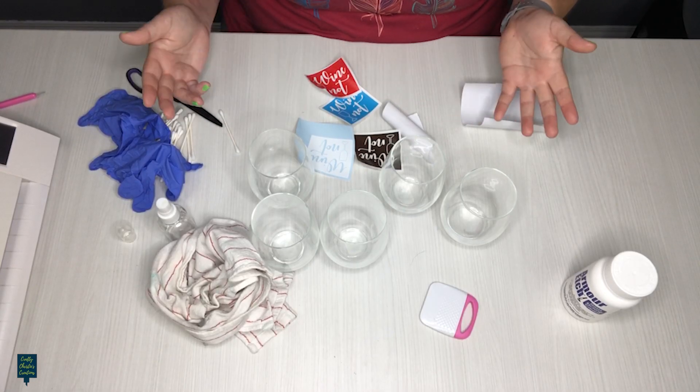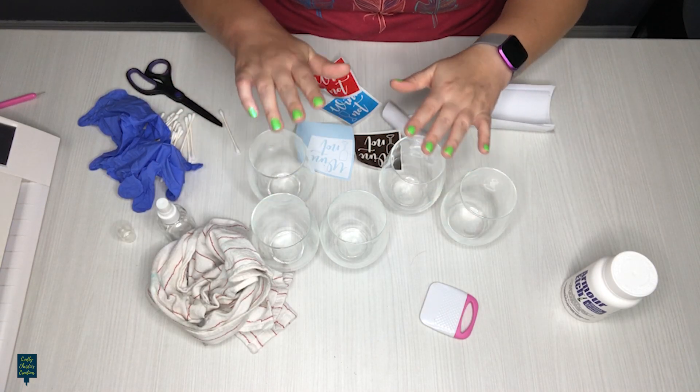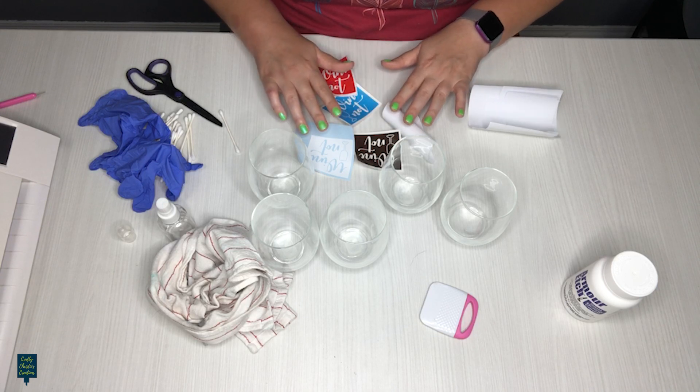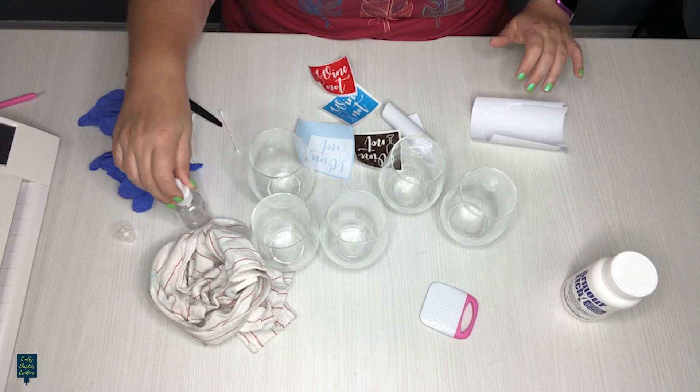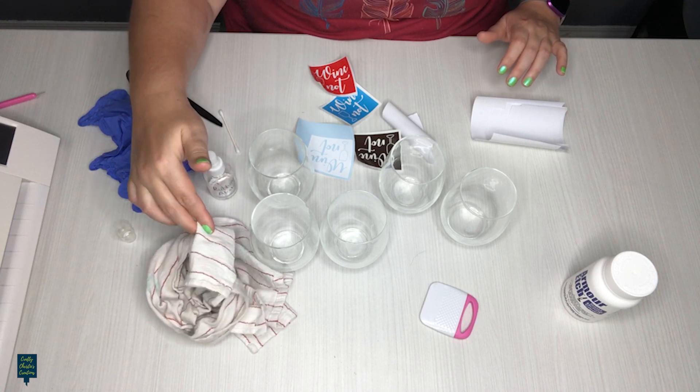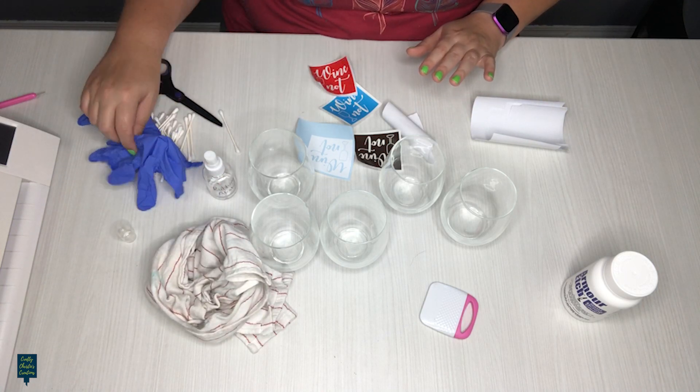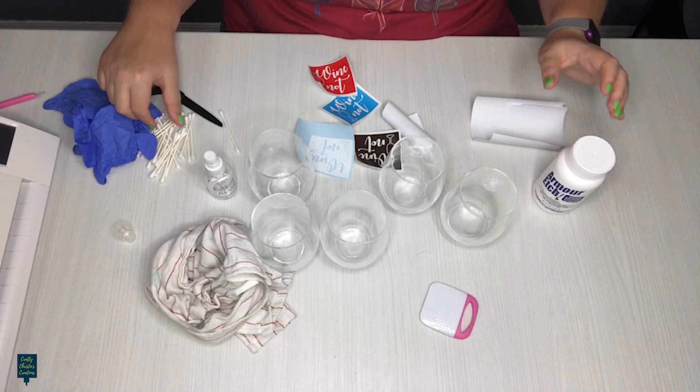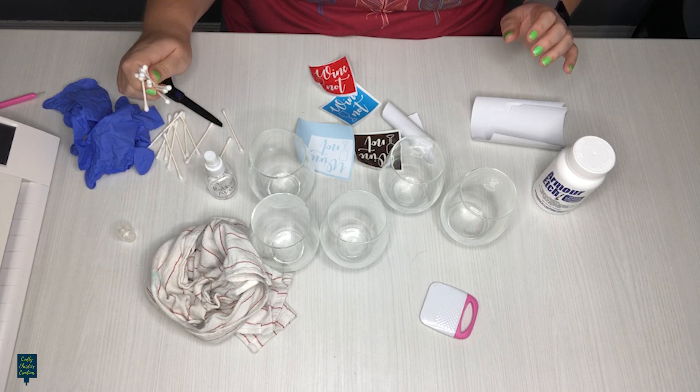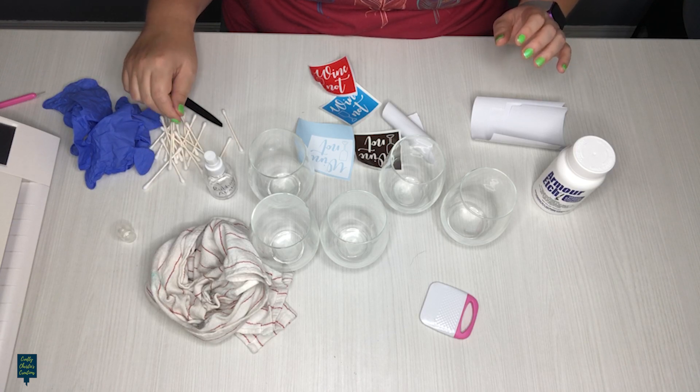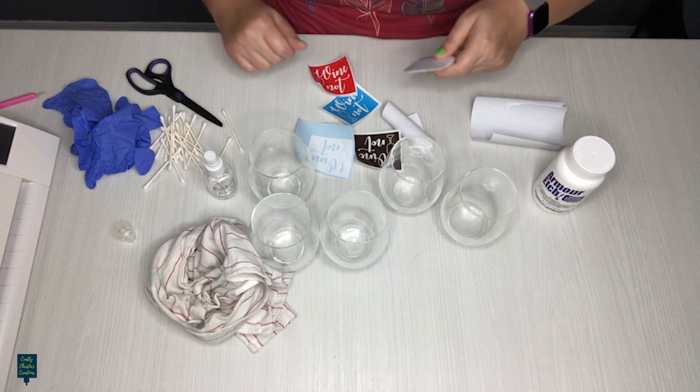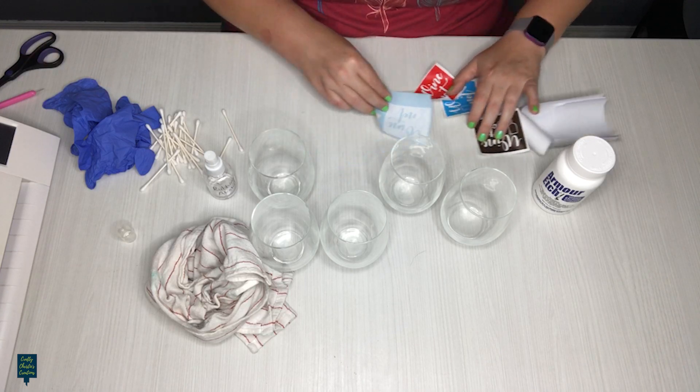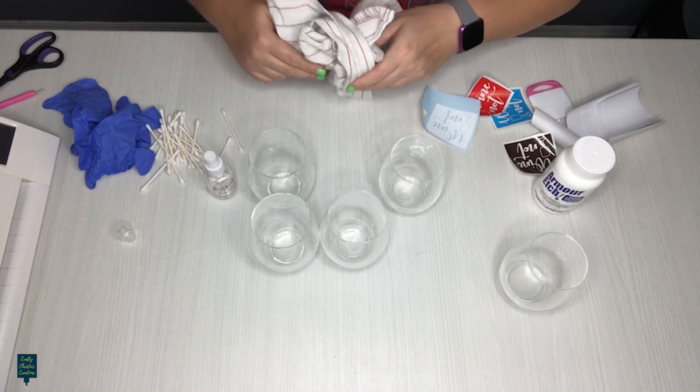Alright, I've got everything set up here. I've got my wine glasses, I've got the design cut out in the different vinyl types, I've got my transfer tape here, I've got my rubbing alcohol and a cloth to clean what we're going to put this on. My gloves, I've got eye protection on, my etching cream, and then I like to use Q-tips to apply it, and then I've got my scraper tools to get that on there.